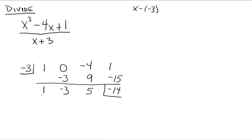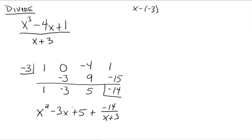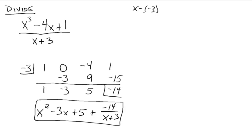So now what's the quotient part? Well, if you started with x cubed, then this is x squared. Go in descending order: minus 3x plus 5, plus negative 14 over x plus 3. Right now we're only using synthetic division when we have the form 1x plus or minus a real number.